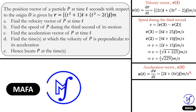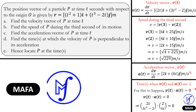Part d asks for the time or times at which velocity is perpendicular to acceleration. Since both are vectors, they are perpendicular when their dot product equals zero. Writing the velocity vector in column form as (2t, 3t² − 2) and the acceleration vector as (2, 6t), we take the dot product and equate it to zero.